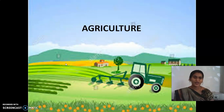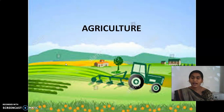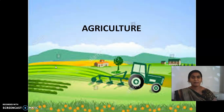Good morning children, hope you all are doing well. In the last class, the same chapter about agriculture — we learned about different kinds of farming, cropping patterns, different kinds of crops, the technology and infrastructural use in agriculture, and the contribution of agriculture and employment towards the Indian economy. In today's class, we are going to see about food security and the impact of globalization on agriculture.